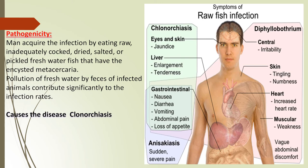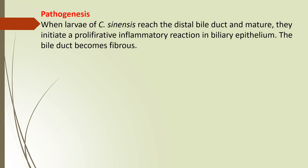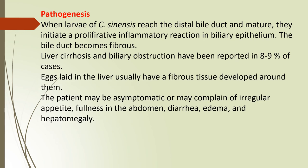There is enlargement of the liver and tenderness, gastrointestinal problems such as nausea, diarrhea, vomiting, abdominal pain and loss of appetite, and sudden severe pain. When larvae of Clonorchis sinensis reach the distal bile duct and mature, they initiate a proliferative inflammatory reaction in the bile epithelium. The bile duct becomes fibrous, and liver cirrhosis and biliary obstruction can result.